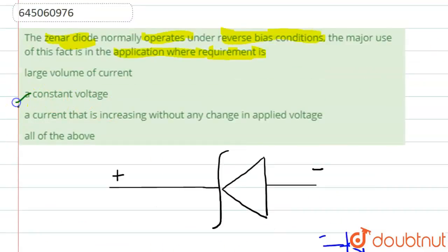Our answer will be constant voltage, so the correct option is option number B.